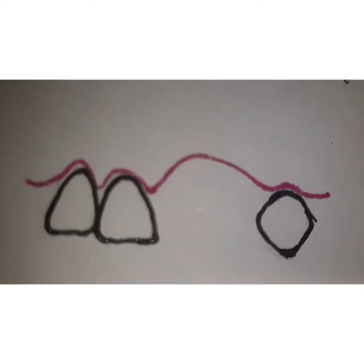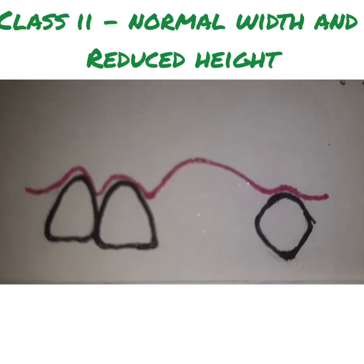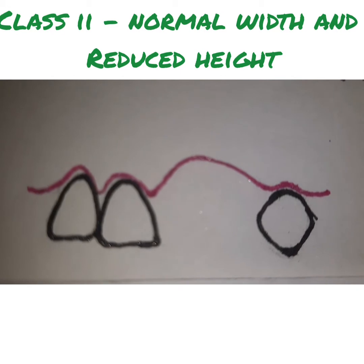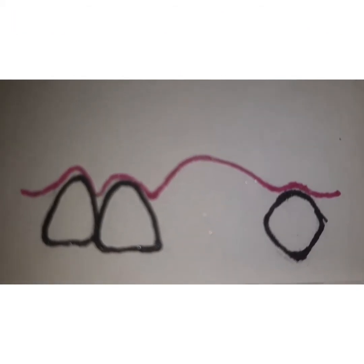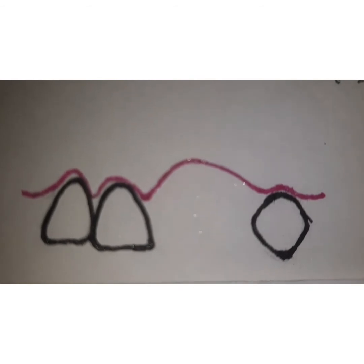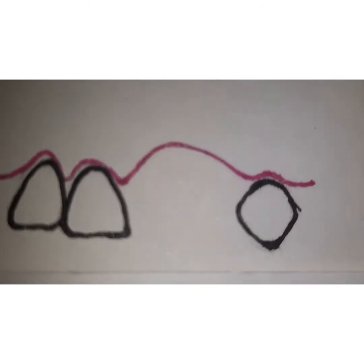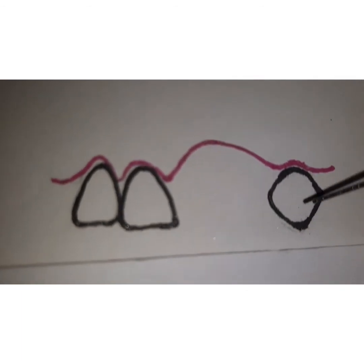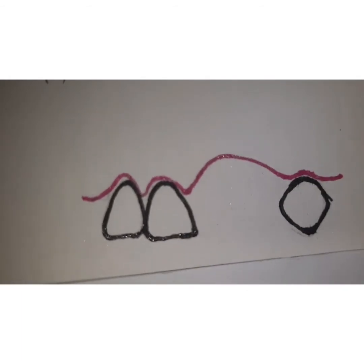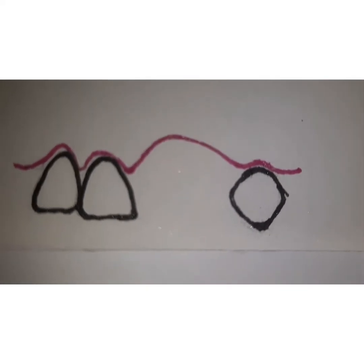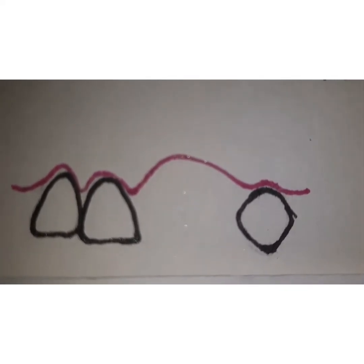Seibert's Class 2 is a residual ridge which has a normal faciolingual ridge width — meaning the width is normal — but there is loss of ridge height. The width of the residual ridge is normal, but the height is deficient.